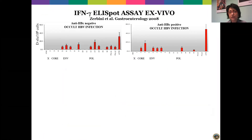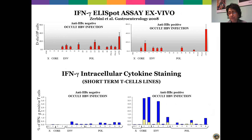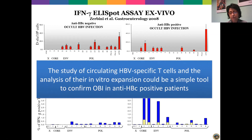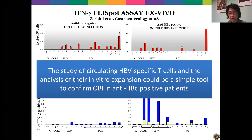From an immunological point of view, circulating HBV-specific T cells can be present at comparable levels in anti-HBc positive and anti-HBc negative OBI patients. However, in vitro expansion of HBV-specific T cells and interferon-gamma production is much stronger in seropositive OBI than in seronegative OBI cases. This study was performed by Carlo Ferrari's, Gabriele Missale's group, and our group, and circulating HBV-specific T cells could be proposed as an indirect biomarker of OBI, though this hypothesis needs confirmation by further studies.